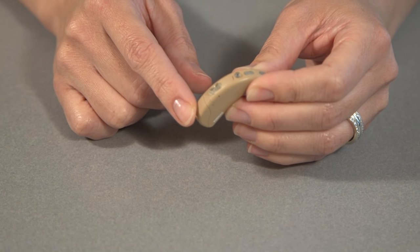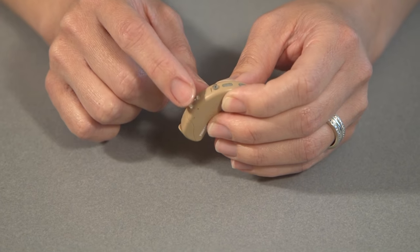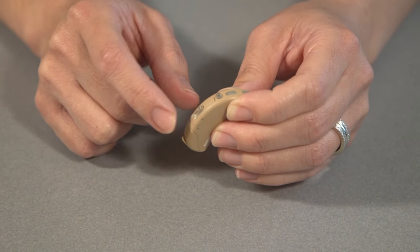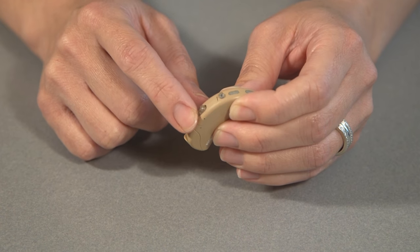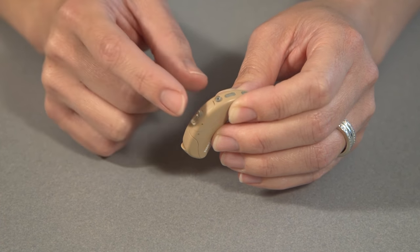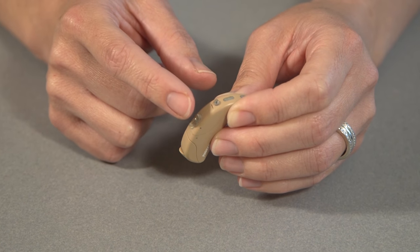If the person would like to adjust the volume, use the rocker switch here. And to decrease the volume, you just do a short press on the bottom of the rocker switch. And to increase the volume, you just do a short press on the top of the rocker switch.